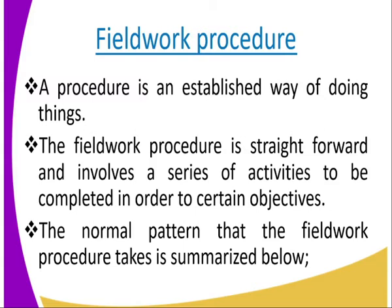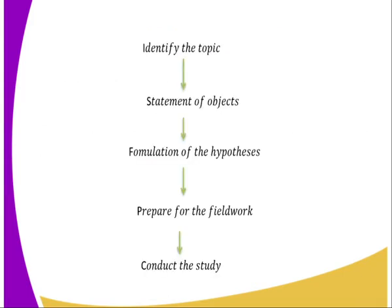The normal pattern that the fieldwork procedure takes is summarized below. That is the fieldwork procedure: first, identify the topic; after that, state the objectives; after the statement of objectives, formulate the hypothesis; after formulating the hypothesis, prepare for the fieldwork; and then conduct the study. Let us have a look at all these steps one by one.